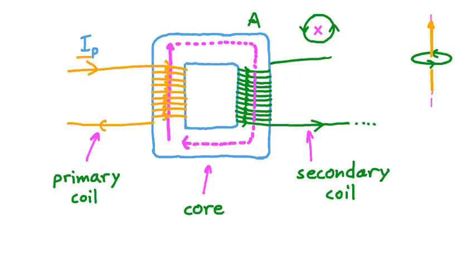Let's go back to Ip, the current through the primary coil, for a moment. If this current was constant in time, then a magnetic field would still be formed through the loops of the coil and carried through the core. But after the loops of the secondary coil had been initially exposed to this change, after that there would be no more change — the field lines would stay the same. And if there was no more change in the total magnetic field through these loops, there would be no more current induced in them.